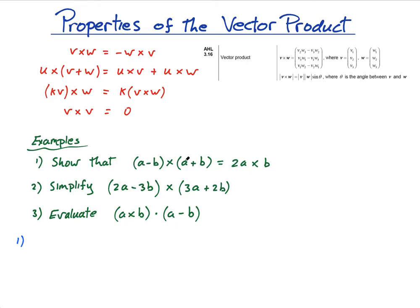So I can just multiply these out kind of like this. So let's write the whole thing here. (a-b) cross (a+b). So this is equal to a cross a, plus a cross b, plus a cross b, minus b cross a, minus b cross b.